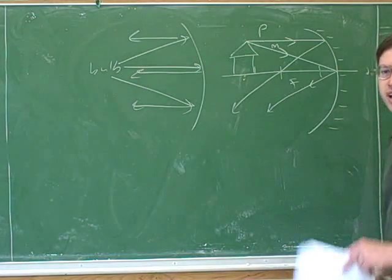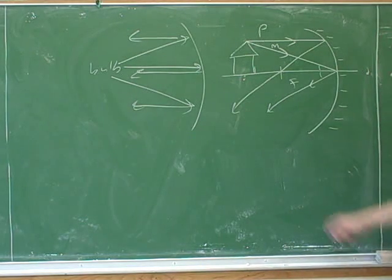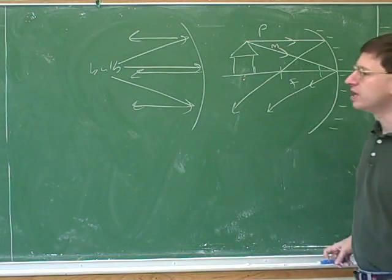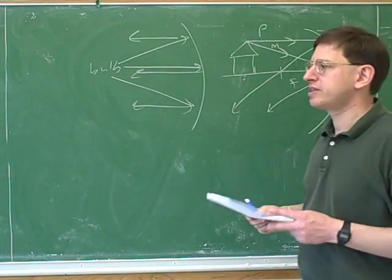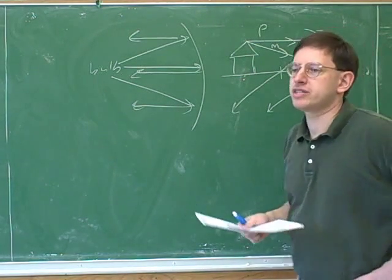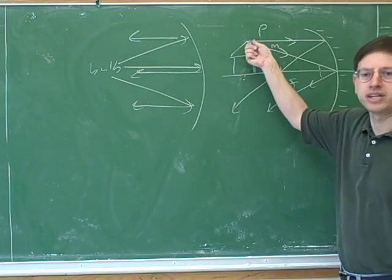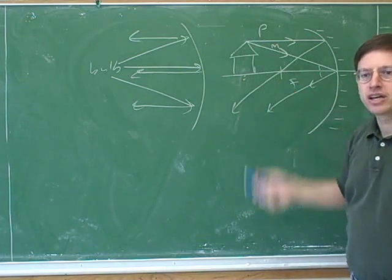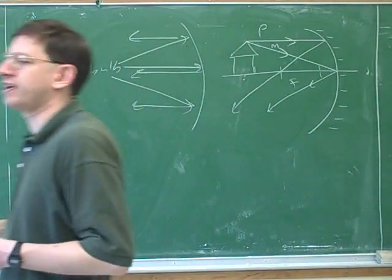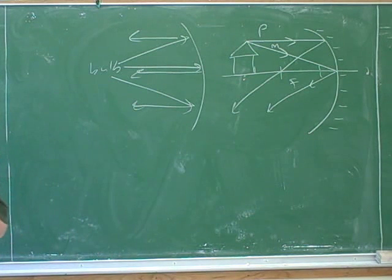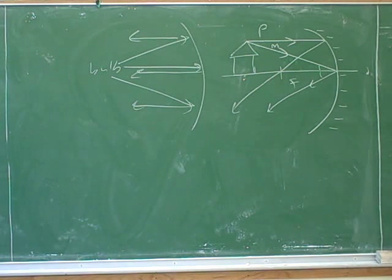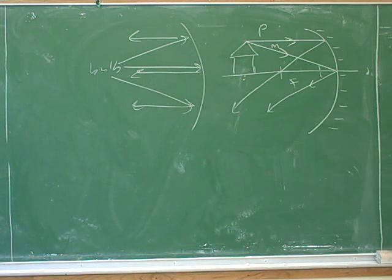So how are we going to get all the rays being parallel like they want in the problem? Let's press on and we'll see how to do that. So far this is just review. When you're doing ray tracing, these are the only two rays — you only need two rays. Because the whole purpose of ray tracing is to find the image, and the image is where the outgoing light rays converge. Once we have two rays, you can see where the outgoing light rays converge.